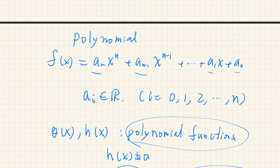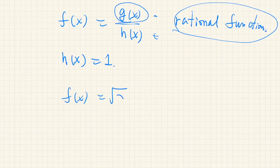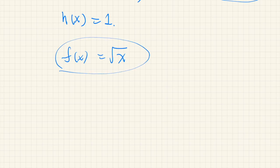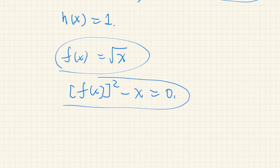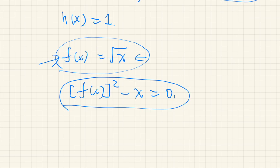In polynomial functions all the powers of x are natural numbers: 0, 1, 2, 3, and so on. For example, f(x) = √x is not a polynomial function nor a rational function. However, we can still define it as a kind of solution to an algebraic equation such as f(x)² − x = 0. This is an example of an algebraic function which is not a rational function.